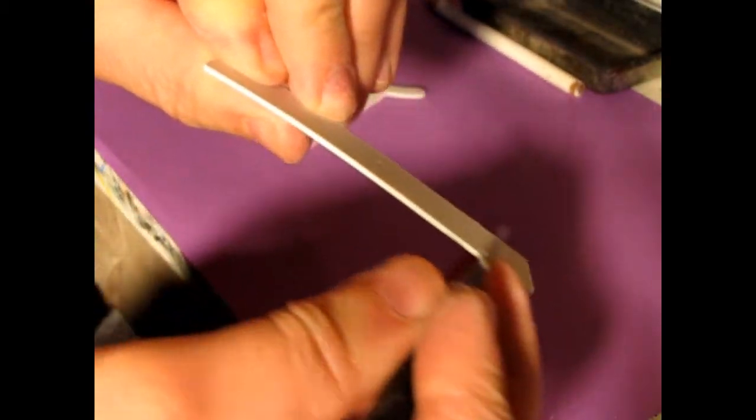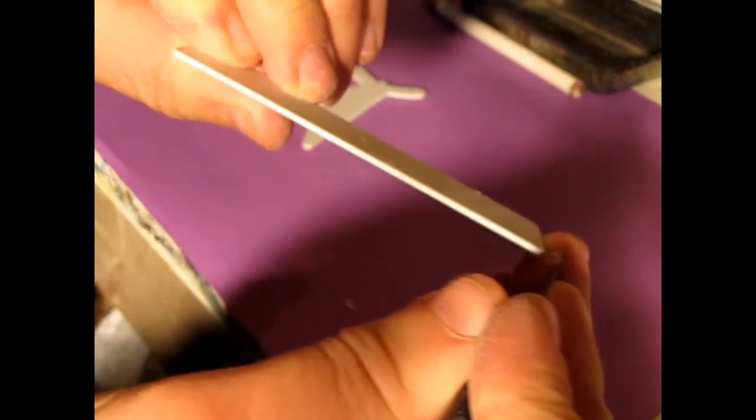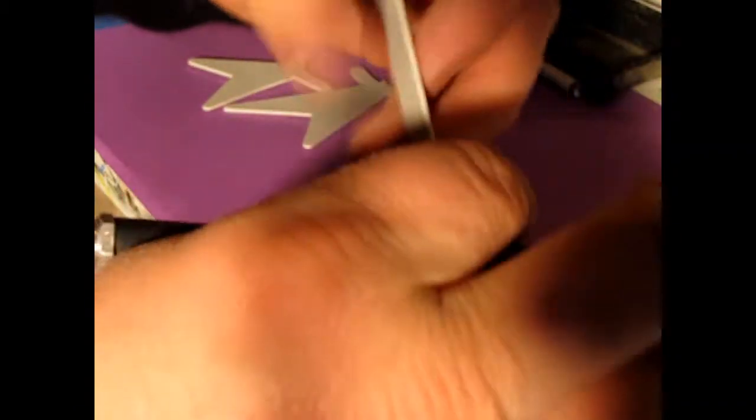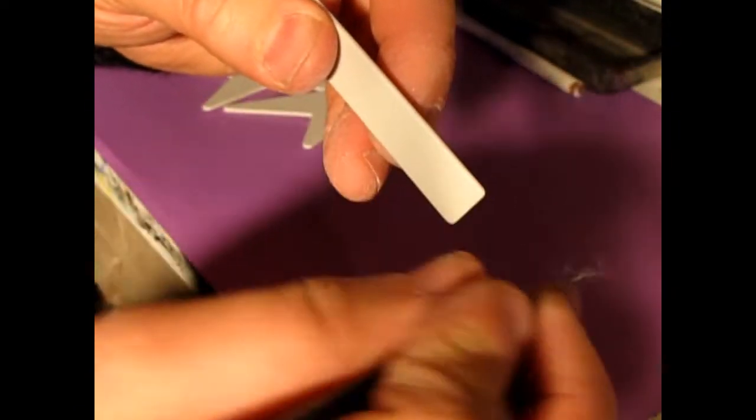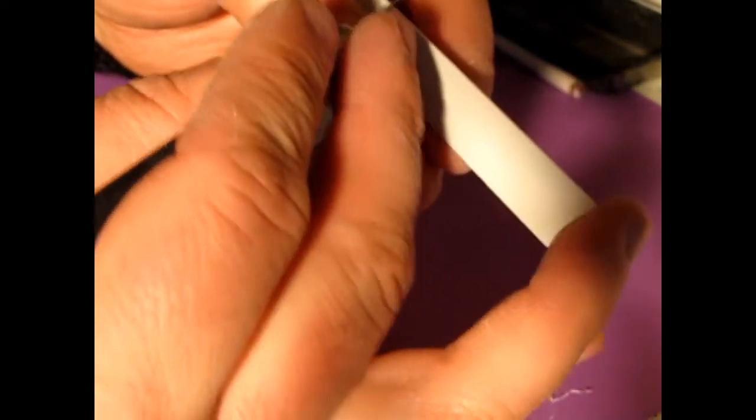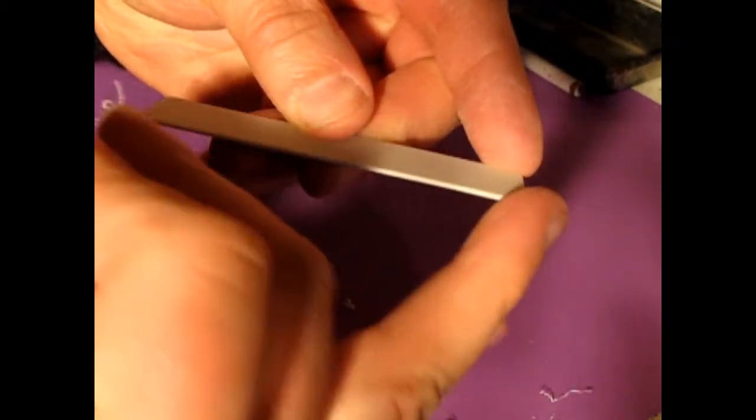So what we want to do is we want to drag our hobby knife along this. This is a technique called adzing and it basically rounds this corner off a little tiny bit to make it smoother. And this will help with the paint application.